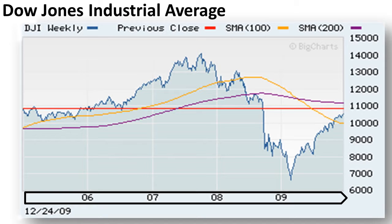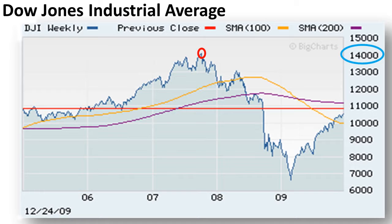After two years of severe fluctuations, during which time the Dow Jones Industrial Average hit lows not seen in 20 years, prices are now back at 2006 levels. The index remained steady for most of 2006, hovering around 11,000 points. Then, midway through 2007, it began to rise sharply, reaching a peak of 14,000 points in September of that year.